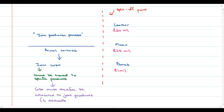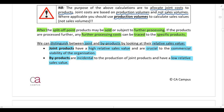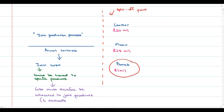If we look at the sales value of the bones in isolation we have a high absolute sales value, but we need to look at the relative sales value — that is, the sales value of the bones compared to the other products. The bones have a very low sales value when compared to leather and meat. So the bones would be classified as a byproduct, and the leather and meat would be classified as joint products.